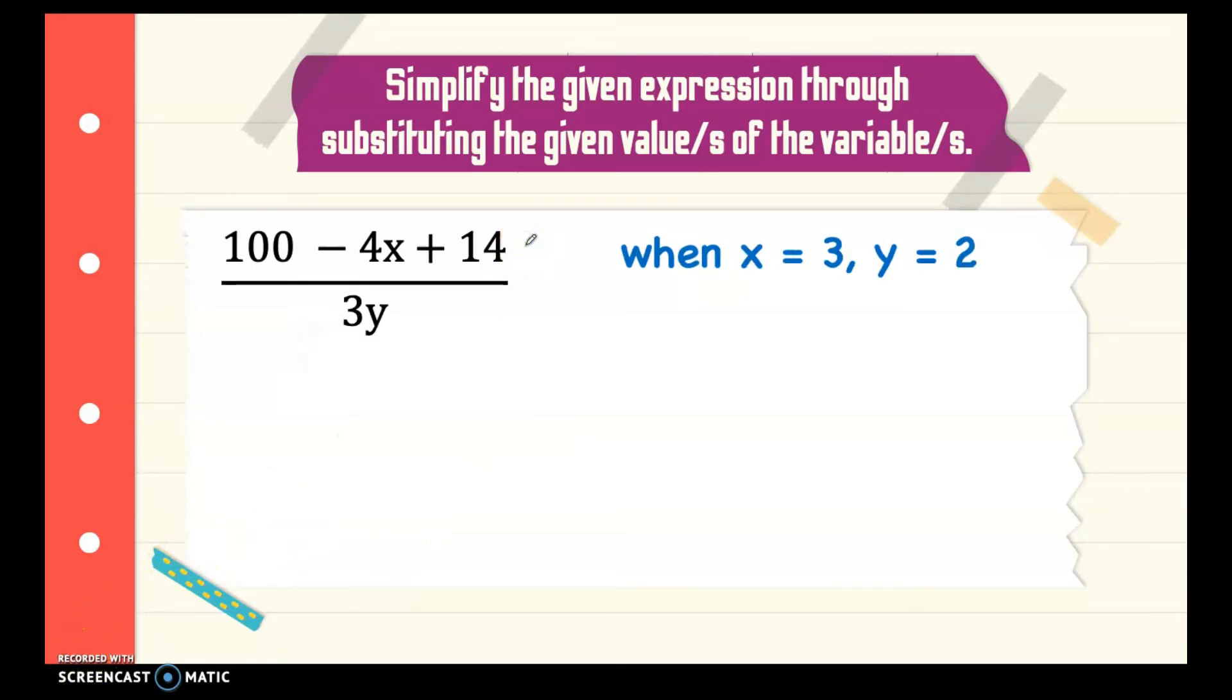Another example we have 100 minus 4x plus 14 divided by or over 3y. When x is equal to 3 and y is equal to 2, what is the value of the expression? Let's substitute the value of the variables for x is 3 and for the y is 2. Then, you simplify first here the numerator or the dividend before you divide it to this 3 times 2.